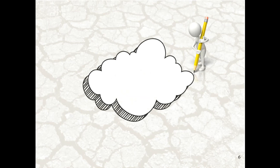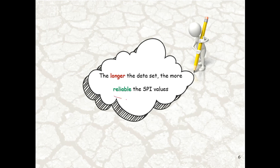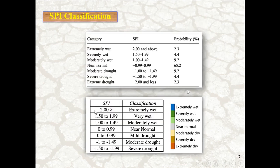Therefore, the longer the dataset, the more reliable the SPI values. If we want to have reliable SPI values, we should consider the key point I just showed you.